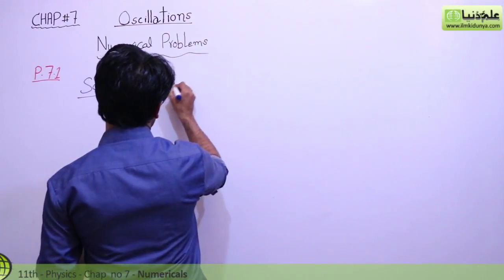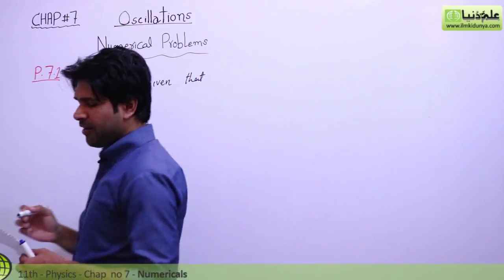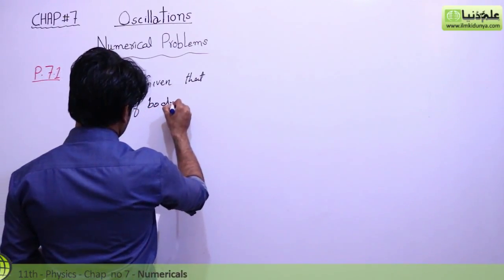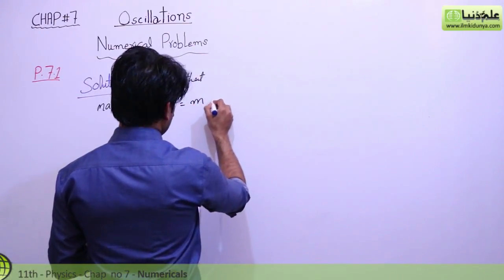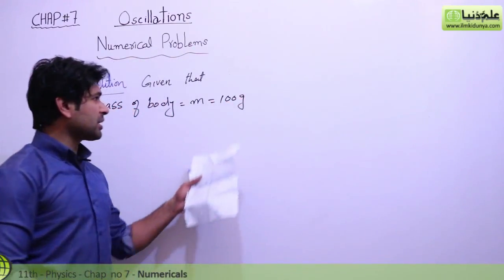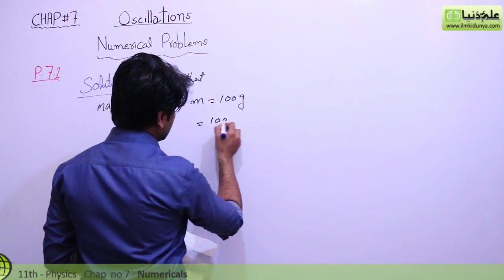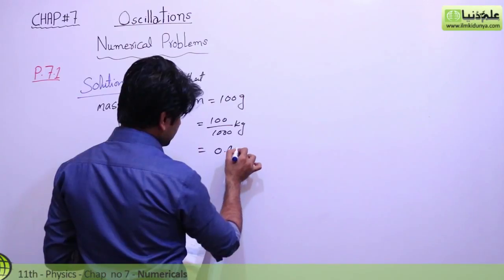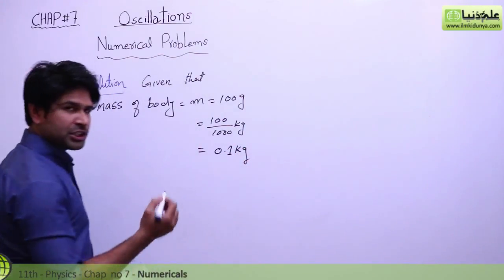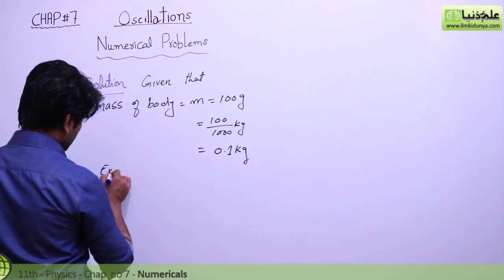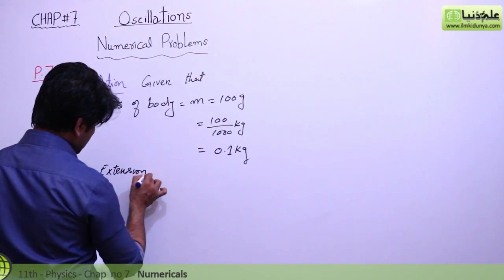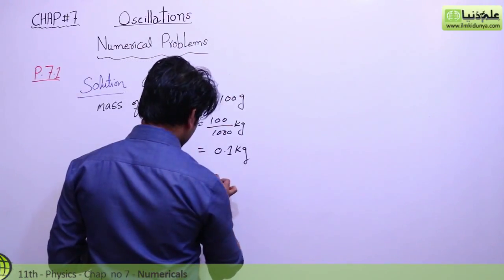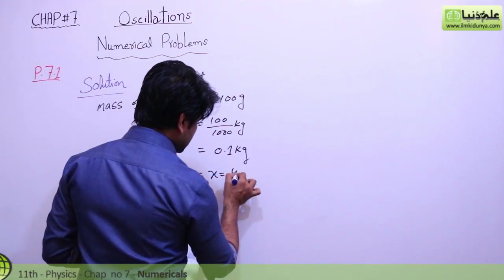Given that: mass of body m equals 100 gram. We will convert this 100 gram into kilogram by dividing by 1000, so it will be 0.1 kg. The next thing is extension — elongation in the spring. Extension in spring x is given as 4 centimeter.